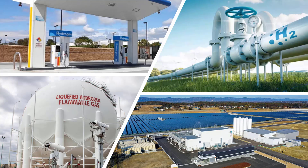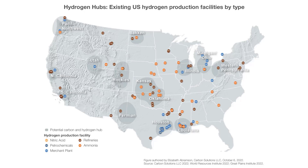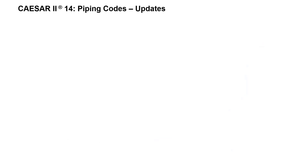These codes allow users to evaluate facilities and systems involved in the production, storage, transportation, and distribution of hydrogen. This is important because hydrogen will likely be a vital renewable energy source in the future, as new uses and benefits are still emerging.